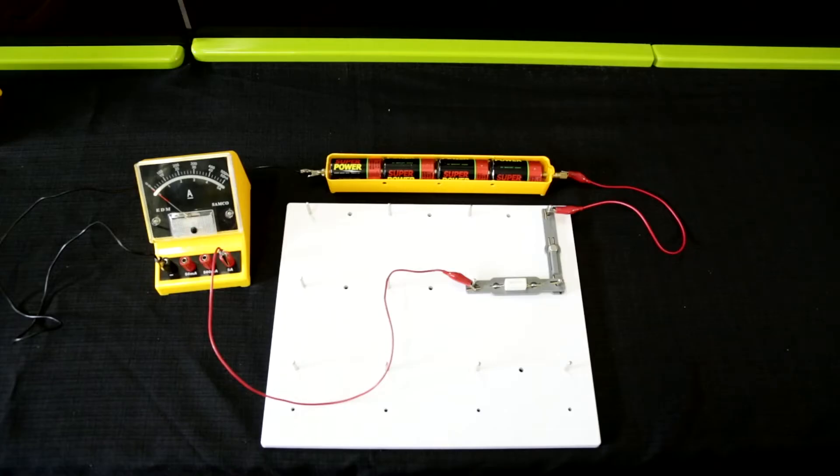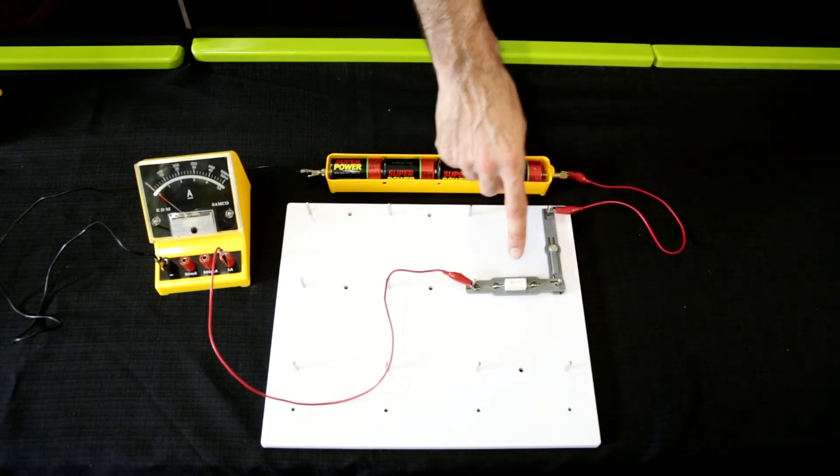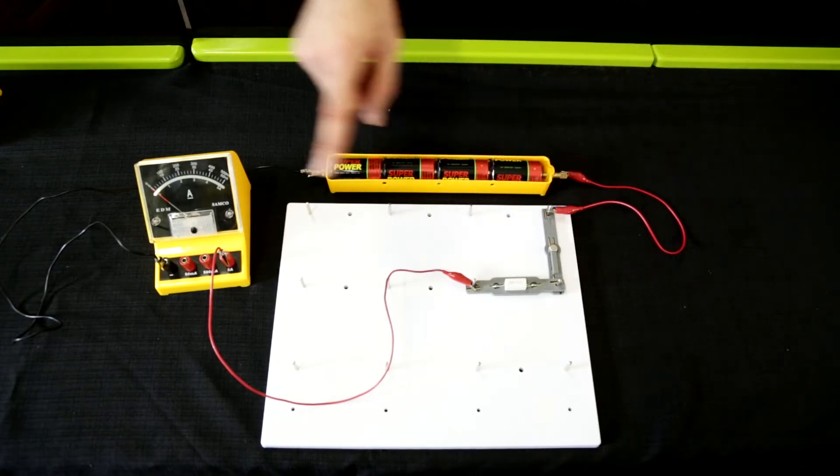Set up a series circuit consisting of a battery of four cells, a switch, a resistor, and an ammeter.